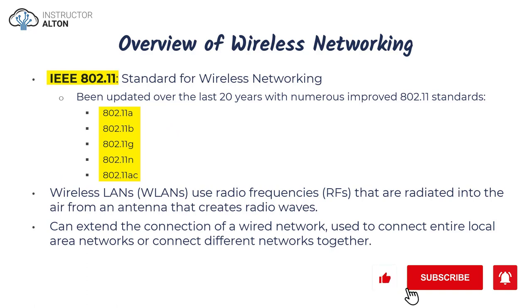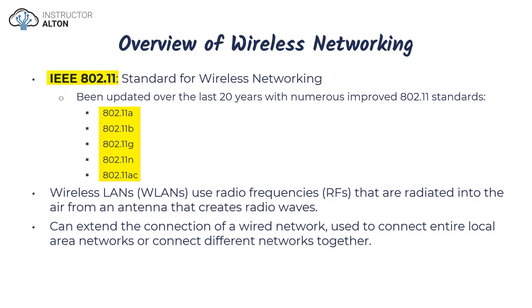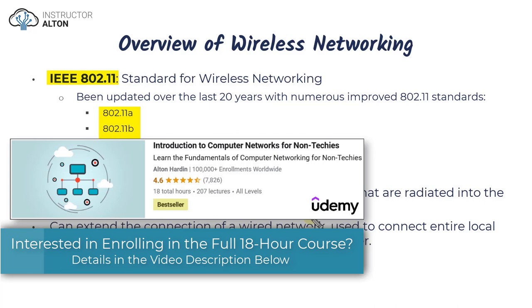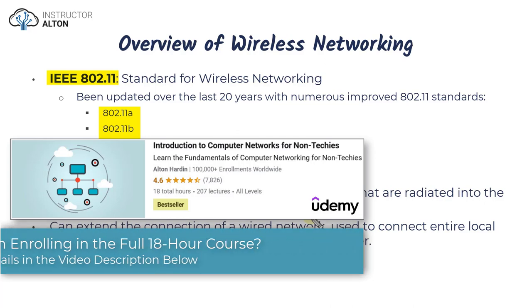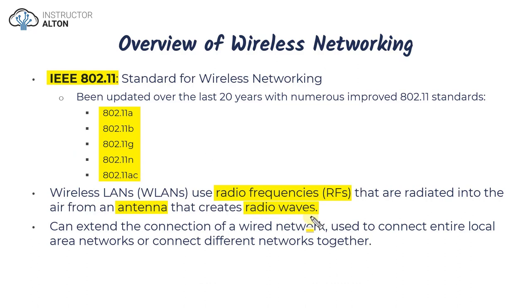How do wireless networks work? There aren't any physical cables in a truly wireless network. Instead, they use radio frequencies that travel through the air — specifically, they're radiated into the air via antenna. Any device connected to a wireless network will have a wireless network interface card and at least one antenna, allowing it to communicate via radio frequencies and radio waves.